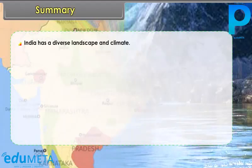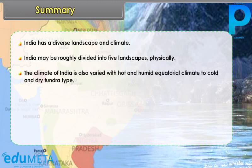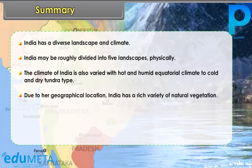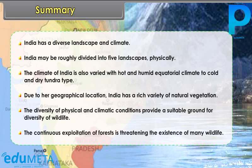India has a diverse landscape and climate, and may be roughly divided into five landscapes physically. The climate of India is also varied, ranging from hot and humid equatorial climate to cold and dry tundra type. Due to her geographical location, India has a rich variety of natural vegetation, and the diversity of physical and climatic conditions provides a suitable ground for diversity of wildlife. The continuous exploitation of forests is threatening the existence of many wildlife species.